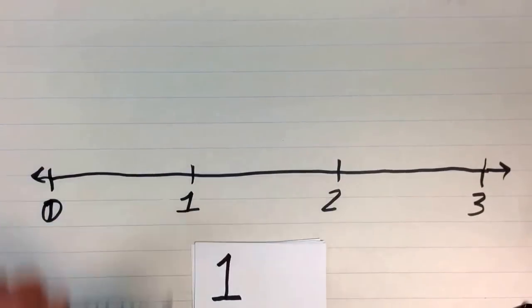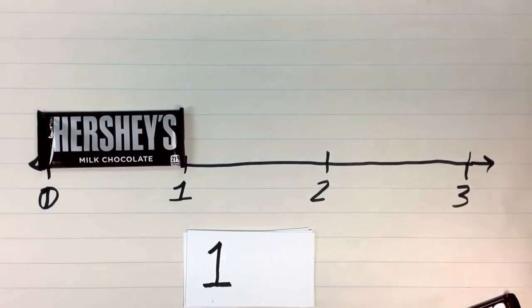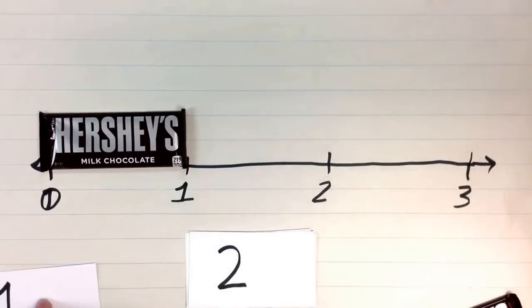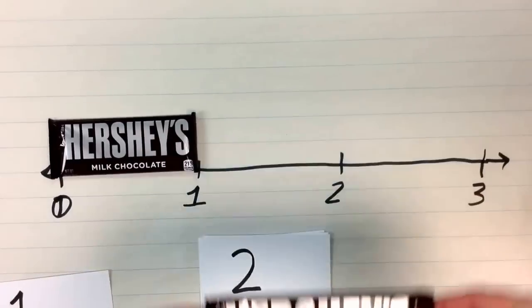So here we go. If we were going to represent one, which is not a mixed number, it's just a whole number, we would have one whole Hershey's candy bar. If we were going to represent two whole Hershey's candy bars on the number line, the number two, we would represent it with two whole Hershey's candy bars.